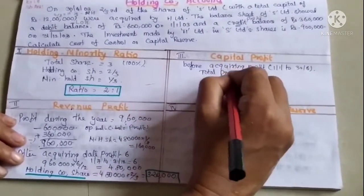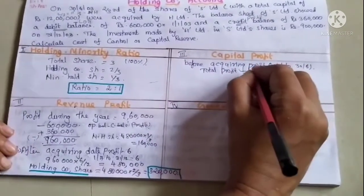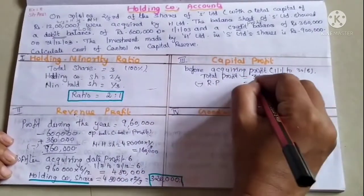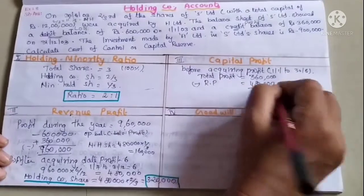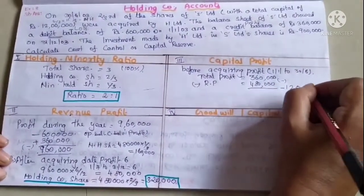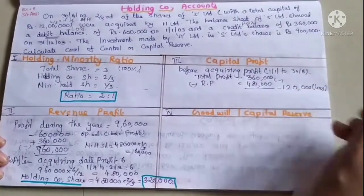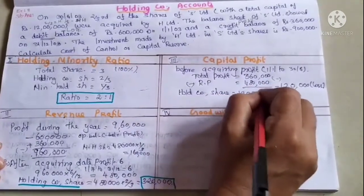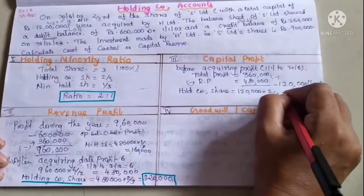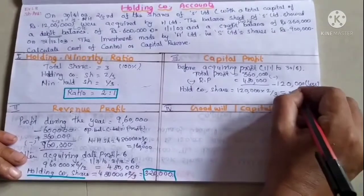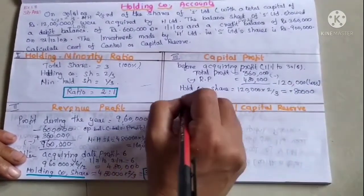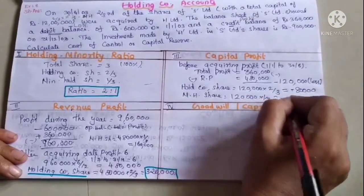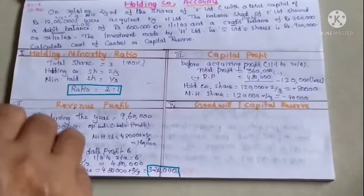Total capital profit before acquisition is 1,20,000, but this is actually a loss. Holding company share of this loss is 1,20,000 into 2 by 3, which equals minus 80,000. Minority holders' share is 1,20,000 into 1 by 3, which equals minus 40,000.